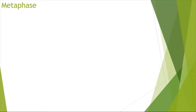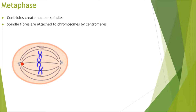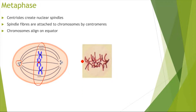Moving on to metaphase, the next stage of mitosis. The centrioles create spindle fibres, and these spindle fibres are attached to the chromosomes by their centromeres. The centrioles are at the poles of the cells and have formed these nuclear spindles attached to the chromosomes. The spindle fibres line the chromosomes up at the equator — the middle of the cell. Looking at a micrograph, you can see the chromosomes lined up on the equator.